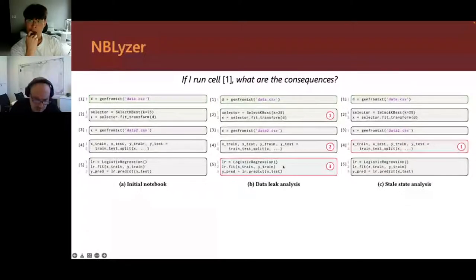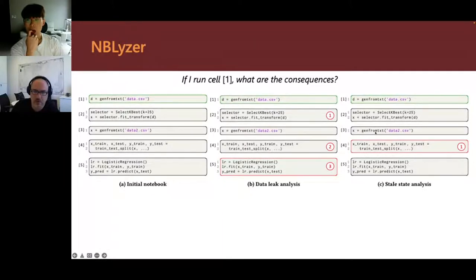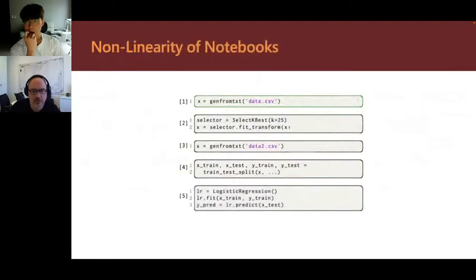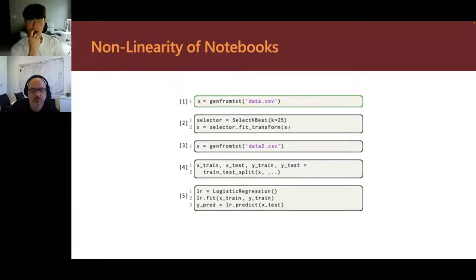Another problem: if we execute a change and then run cell four straight away, we'll get the old value of X from the previous computation. This is a silent bug — you'll get a strange result and probably spend a good amount of time debugging, because you forgot to execute some cells. The real challenge is that notebooks can execute cells in any order. A notebook is divided into cells that can be executed in any order, added, removed, and so on, making static analysis challenging.